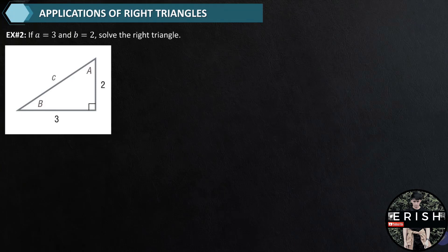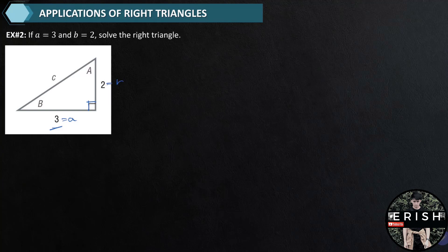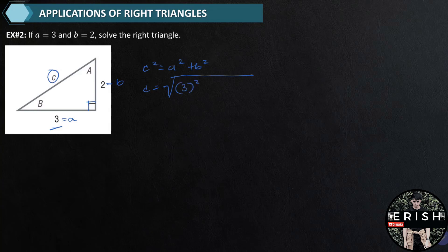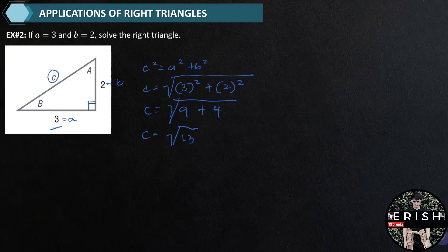Example number 2: if side A is equal to 3 and side B is equal to 2, solve the right triangle. In this problem we have three unknowns: side C (the hypotenuse), angle A, and angle B. We already know the 90-degree angle. By the Pythagorean theorem, C squared equals A squared plus B squared. So C equals the square root of 3 squared plus 2 squared, which is the square root of 9 plus 4, or the square root of 13 — approximately 3.61.